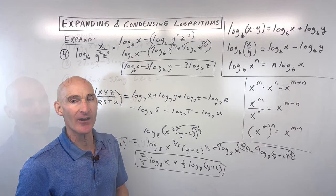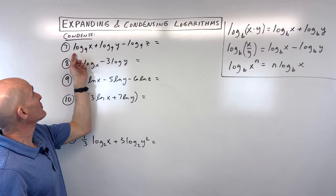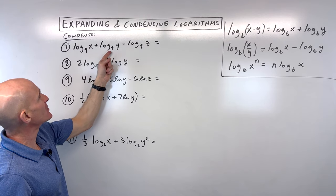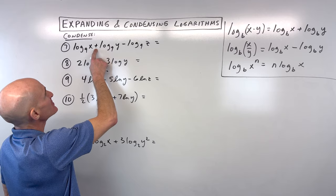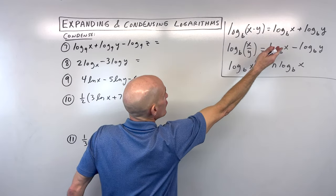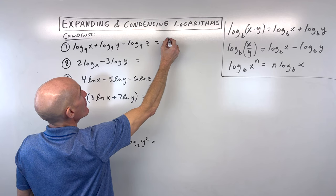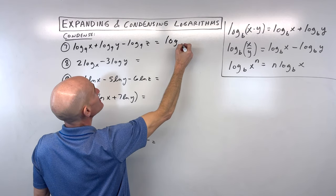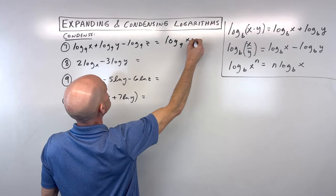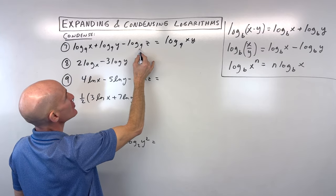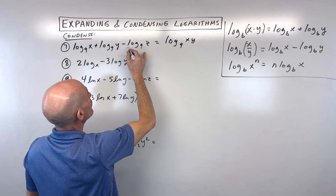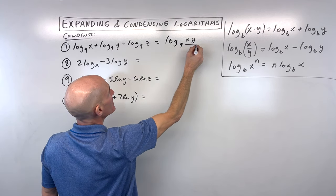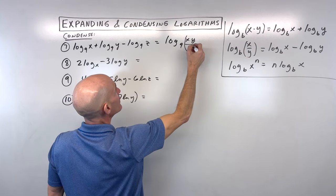Now for condensing. Number 7: log base 9 of x plus log base 9 of y minus log base 9 of z. The logs being added means the arguments are multiplied: log base 9 of x times y. Then we're subtracting log base 9 of z — when we subtract, we divide — so that argument goes in the denominator: log base 9 of xy over z. That's fully condensed into one log.